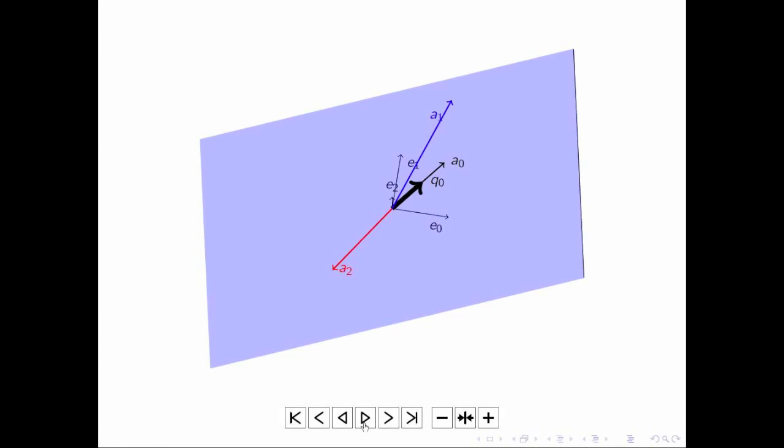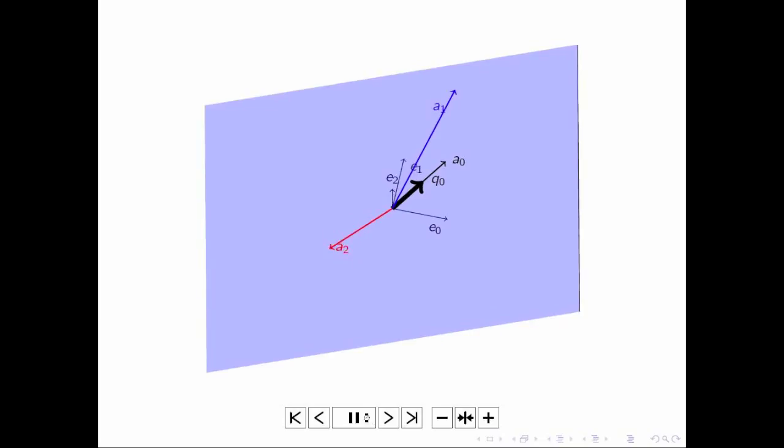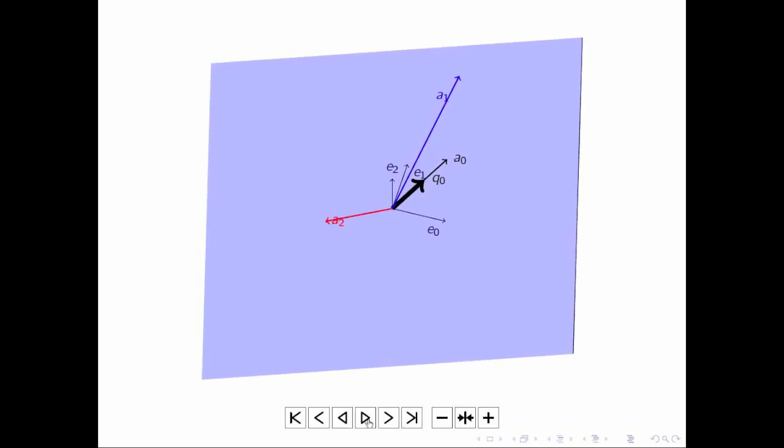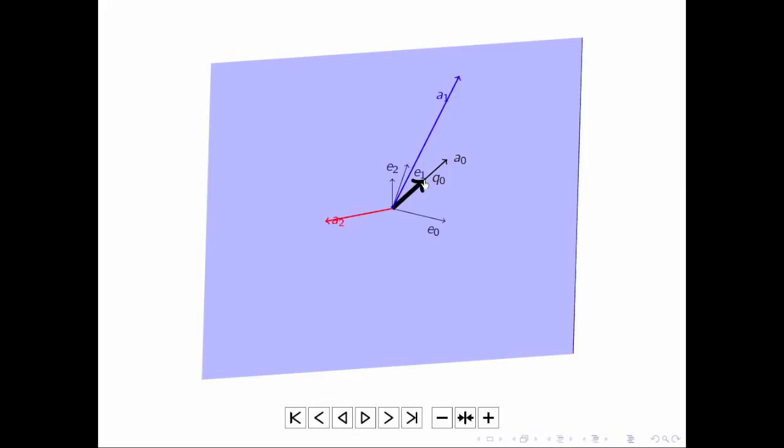Here we visualize the first step of the Gram-Schmidt process. Let's let this spin for a little bit until we get a good view of this. That's probably good enough. We start with the vector A0. We want the vector of length 1 in the same direction as A0. So the thick black arrow here is in the same direction as A0, but is now of length 1.